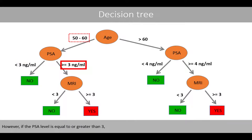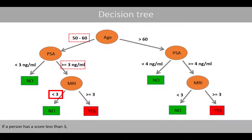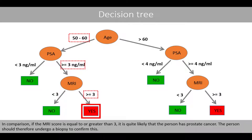However, if the PSA level is equal to or greater than 3, an MRI scan of the prostate is done, which generates a score from 1 to 5. A score less than 3 indicates that it is unlikely that the person has prostate cancer, so no biopsy is taken from the prostate. In comparison, if the MRI score is equal to or greater than 3, it is quite likely that the person has prostate cancer and the person should therefore undergo a biopsy to confirm this.